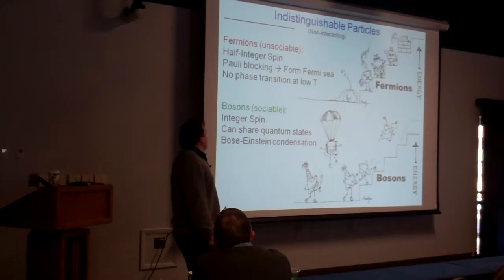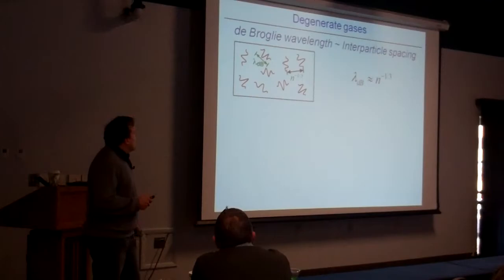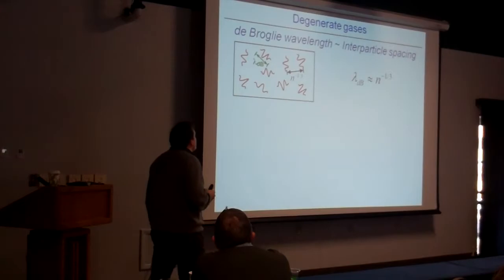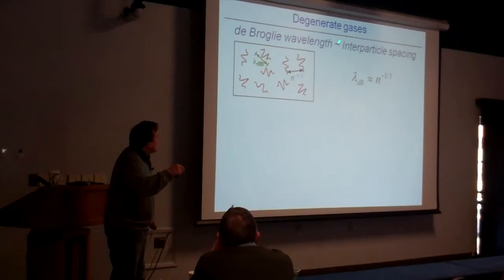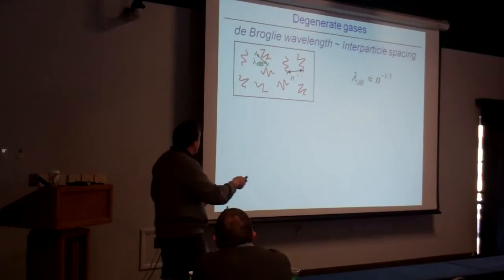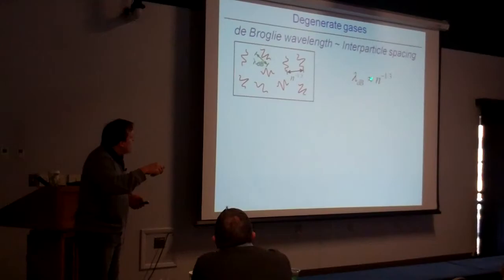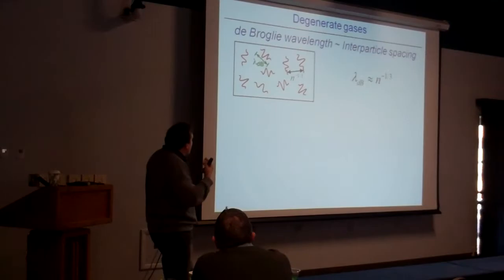You usually don't see that particles are fermions or bosons if you work at high temperatures. But at low temperatures, quantum mechanics takes center stage. We come into an interesting regime when the de Broglie wavelength associated with the propagation of these particles becomes on the order of the interparticle spacing — when λ_deBroglie becomes on the order of n^(-1/3). Then we enter the regime of degenerate quantum gases.